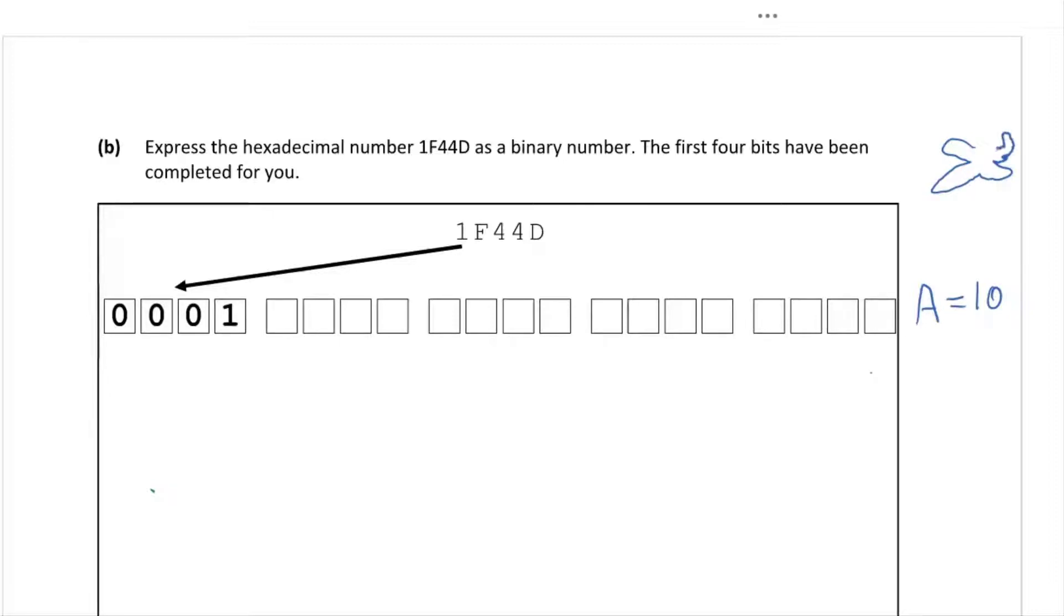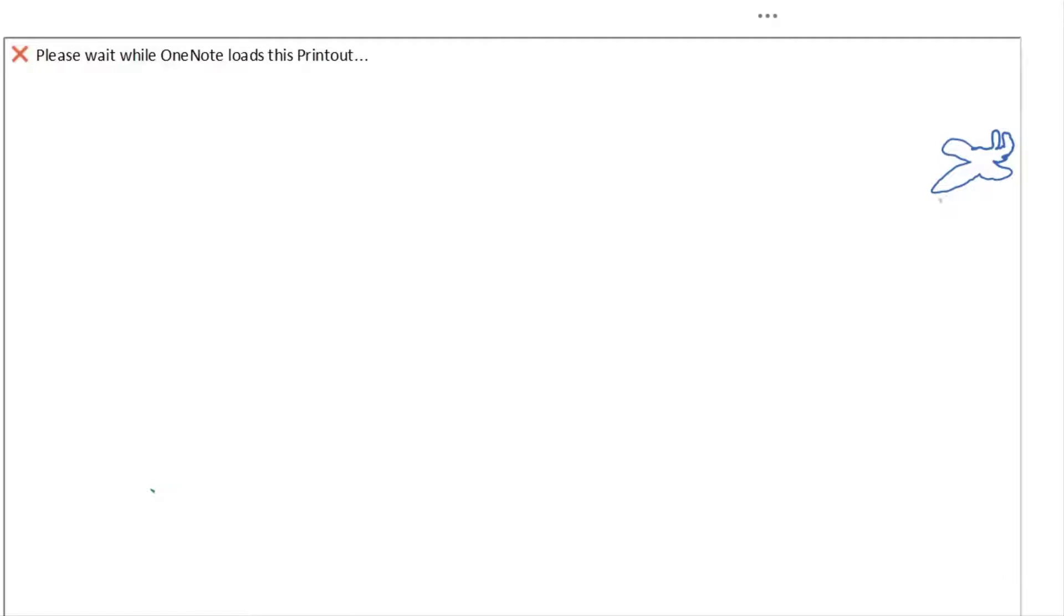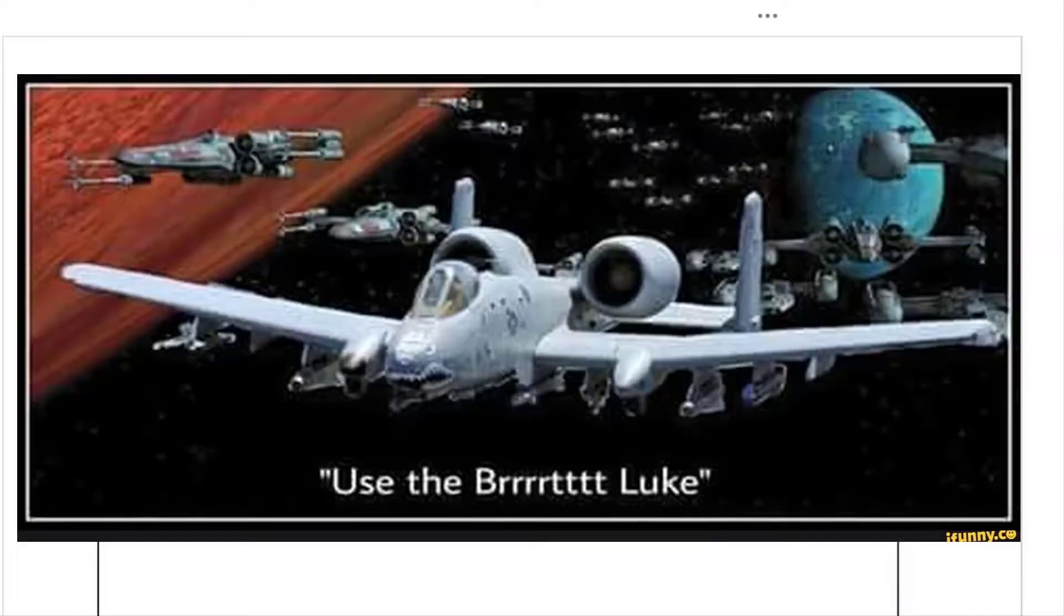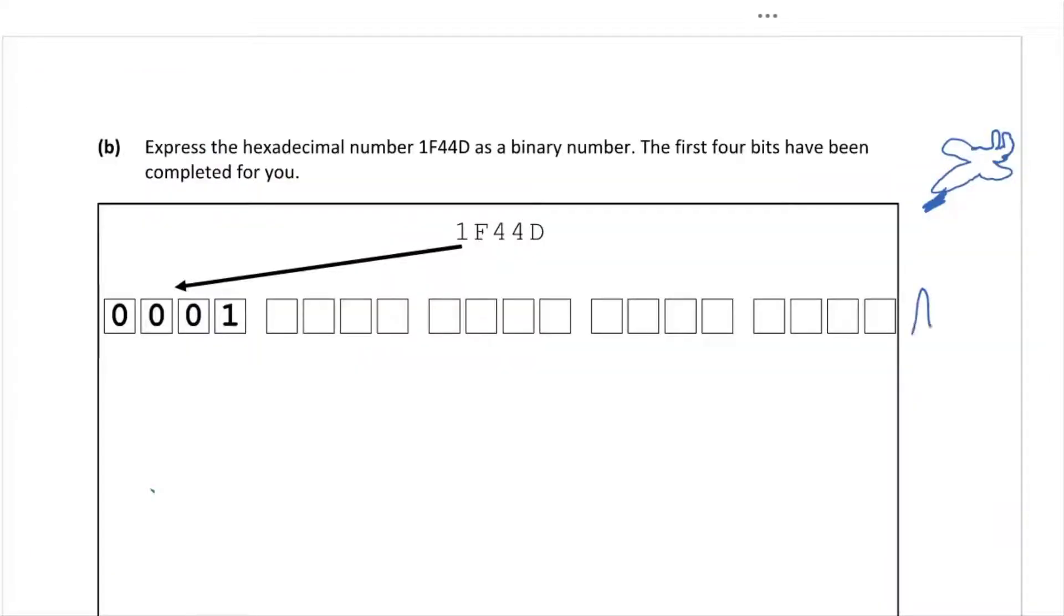A-10 Thunderbolt, you know that plane with the kind of like it's got two things, they have them in Iraq and they've got a big gun at the front that goes burr. A equals 10, the A-10 Thunderbolt, B is 11, C is 12, D is 13, E is 14, and F is 15.